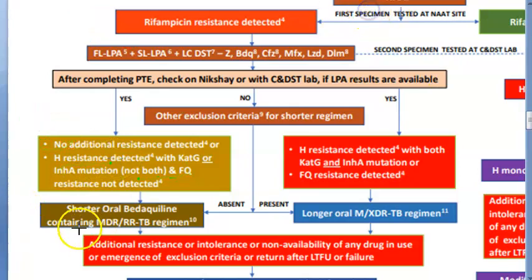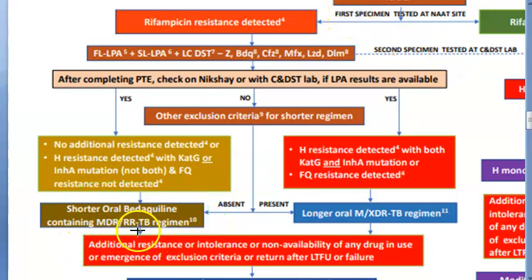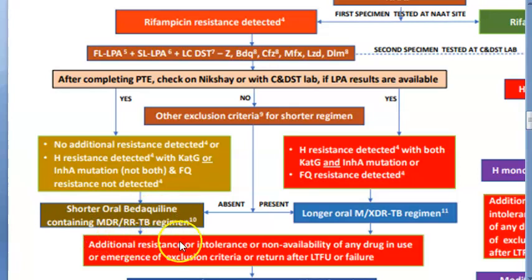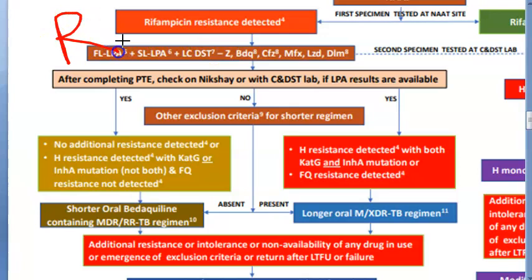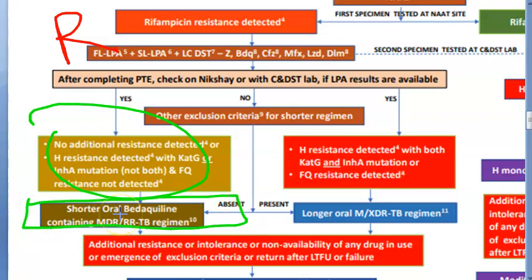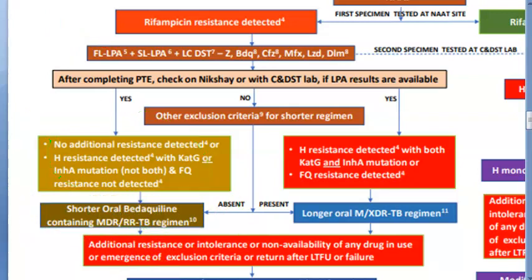If there is some resistance to isoniazid but not extensive additional resistance, they use the shorter oral bedaquiline-containing MDR/RR-TB regimen. So for rifampicin-resistant TB with no major additional resistance detected, the regimen is called the shorter oral bedaquiline-containing MDR/RR-TB regimen. Bedaquiline is a key drug in this regimen.